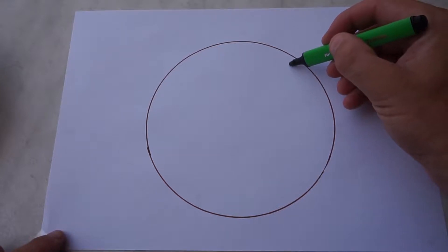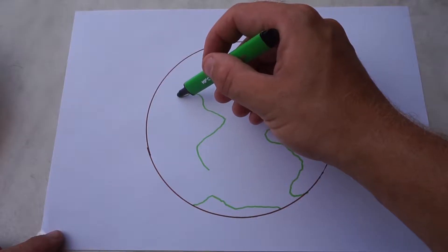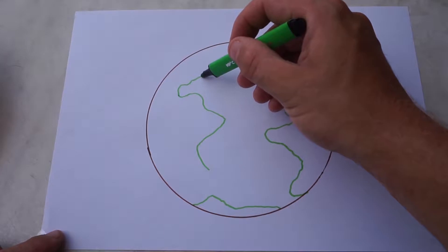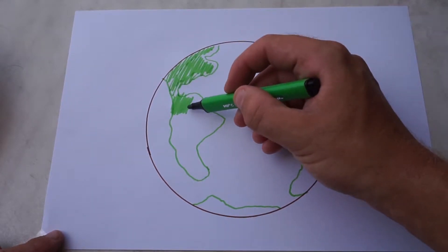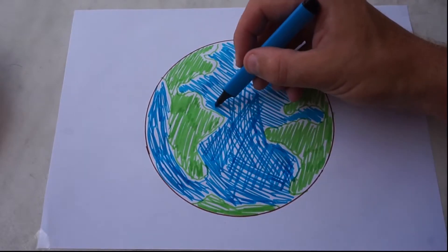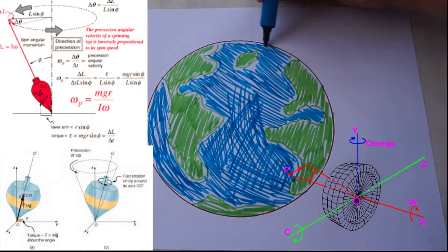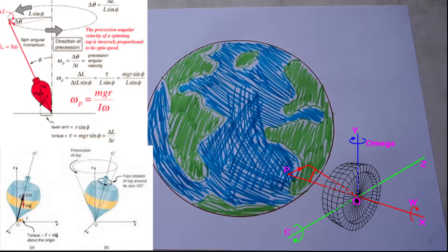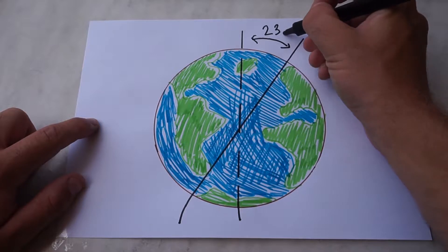This simple video will explain what precession is and how we perceive it on Earth. There are two things to explain: first, the motion of precession, and then precession of the equinoxes. But you don't have to worry — I'm not going to be showing you crazy diagrams with mathematic formulas that are hard to understand. I'm going to break it down nice and slow.